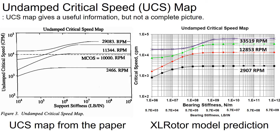As its name indicates, it is only a map which gives useful information but not a complete picture. The left figure is the undamped critical speed map from the paper and the right figure is the map from my rotor dynamic model. In the figures, the x-axis is the bearing support stiffness and the y-axis is the critical speed, and both axes are in log-log scale. As you can see, both figures look relatively close.